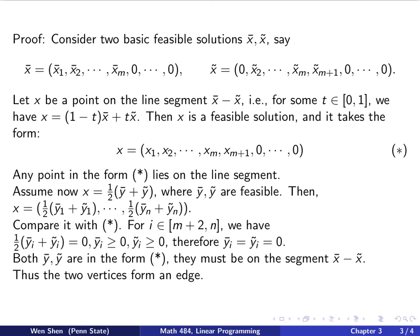Therefore, we conclude that the two vertices, that means the two basic feasible solutions, if you switch only one basic variable, between them you can form an edge.